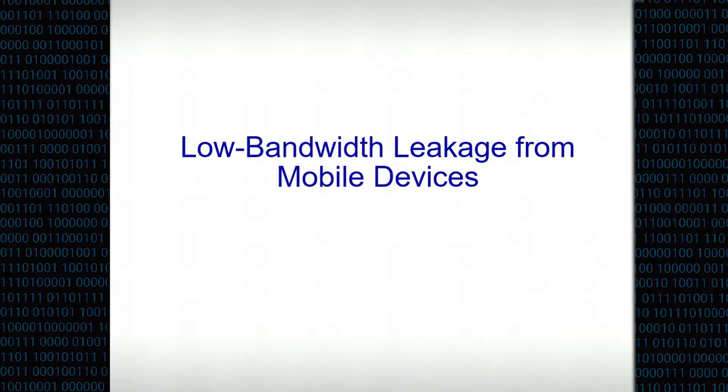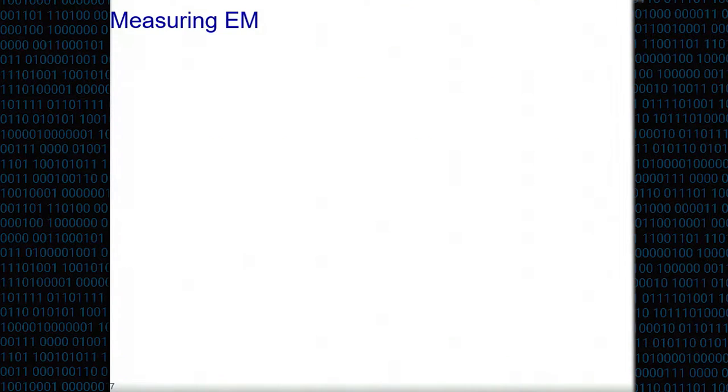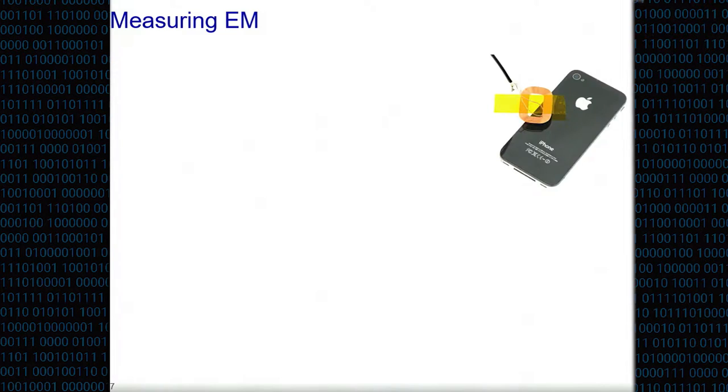Let me start by showing how low bandwidth leakage of a mobile device might look like. We're going to be monitoring EM radiation coming out of a phone. For that, obviously we need a phone, but then we need something to pick up the electromagnetic radiation - this is an antenna, basically a coil, and this will be picking up radiation coming out of the phone.